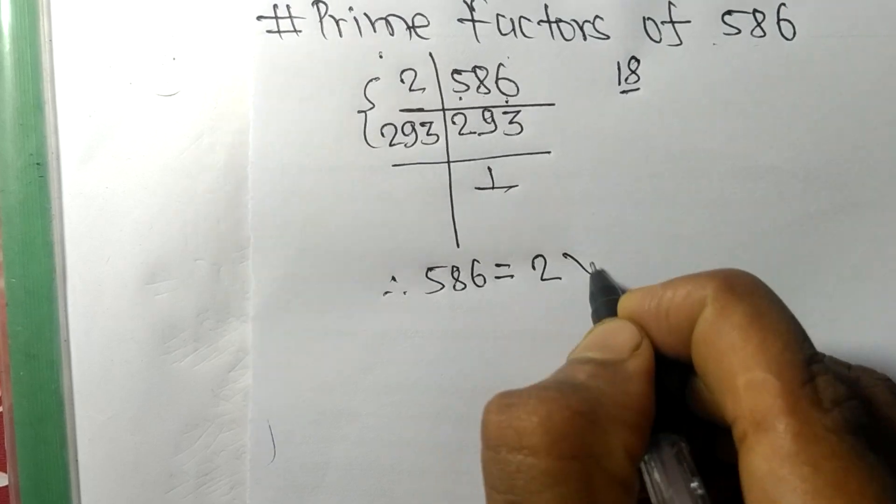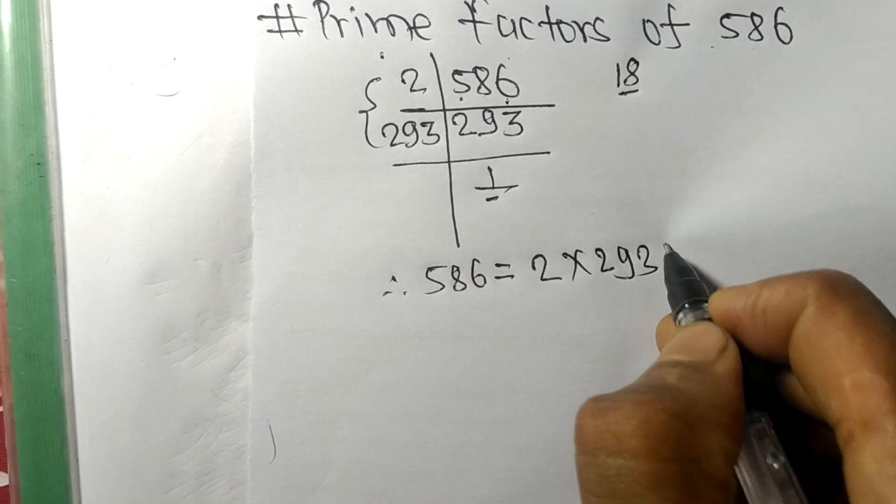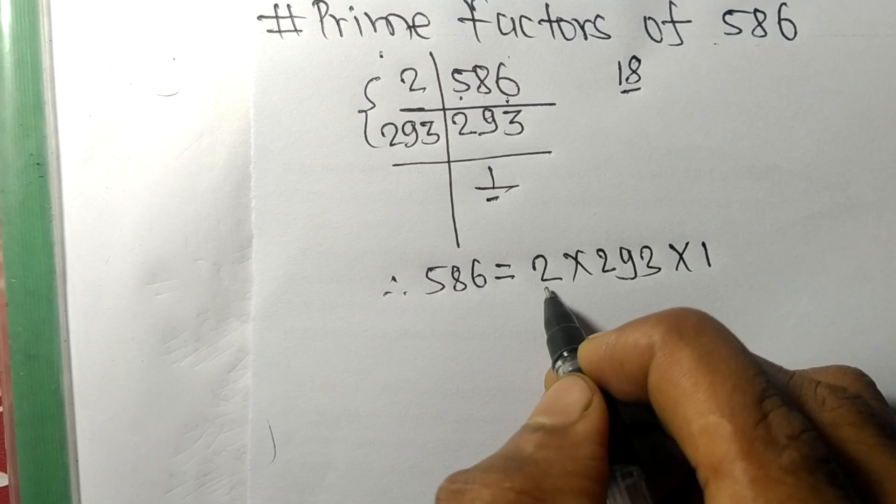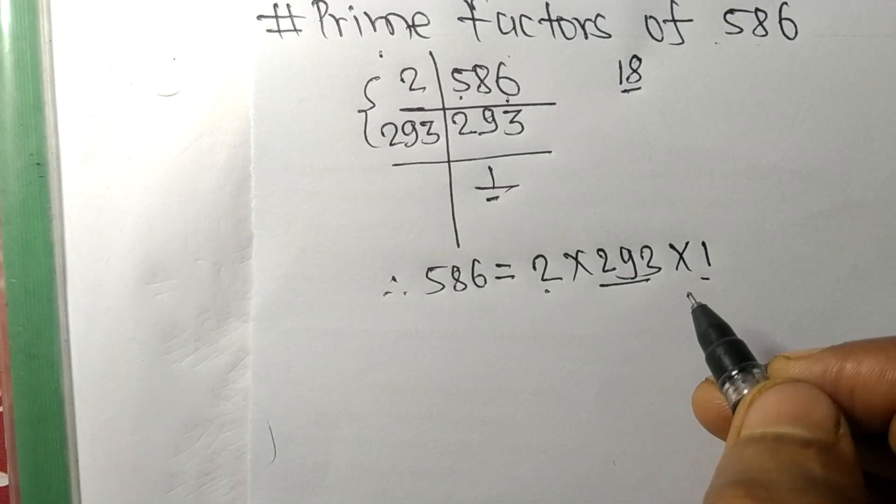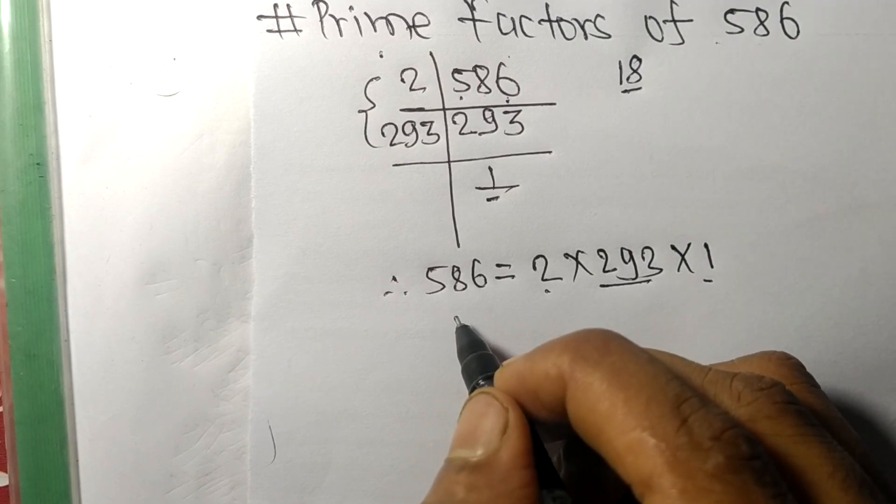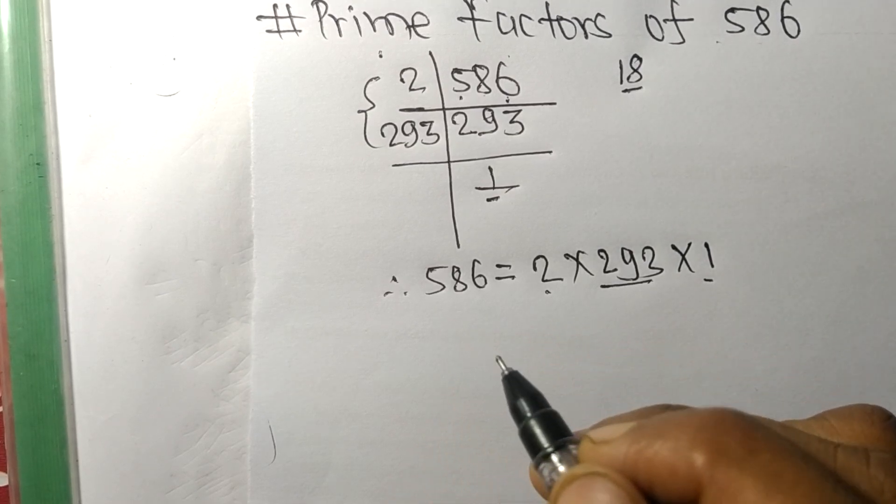Therefore, 586 is equal to 2 times 293, and from here it is 1. So 2, 293, and 1 are the prime factors of 586. This much for today, and thanks for watching.